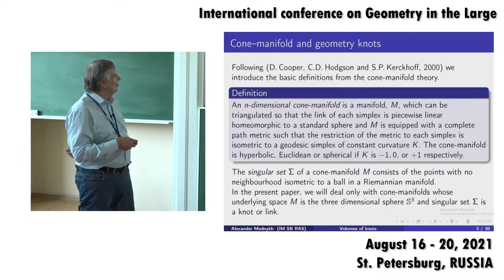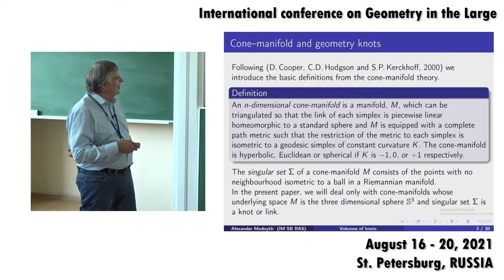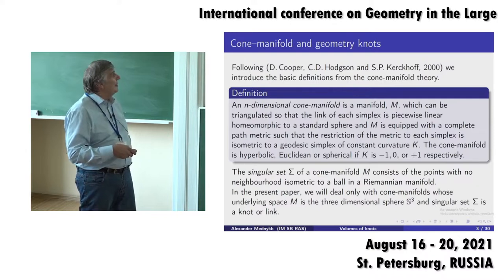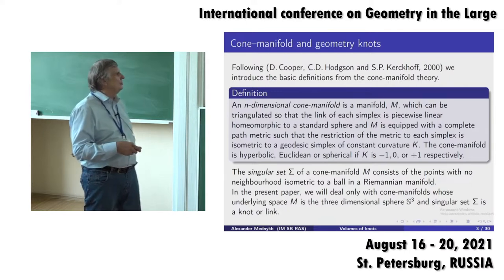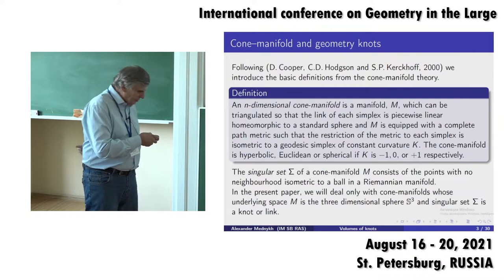So this is a union of circles. We also suppose that the total topological space of this complex is always a three-dimensional sphere. So we consider a three-dimensional sphere with a singular set inside which is a knot or link, and outside of this knot or link we always have a fixed geometry of constant curvature.